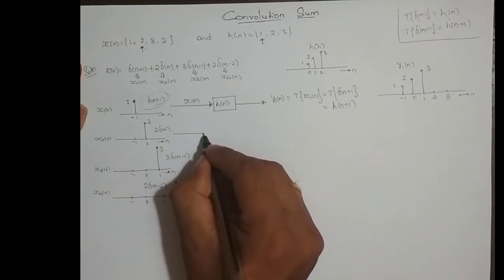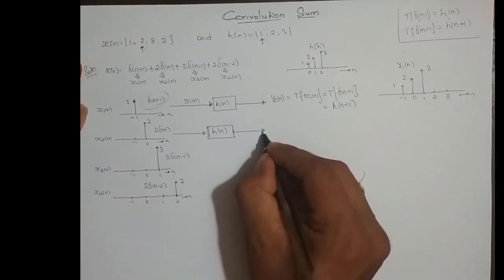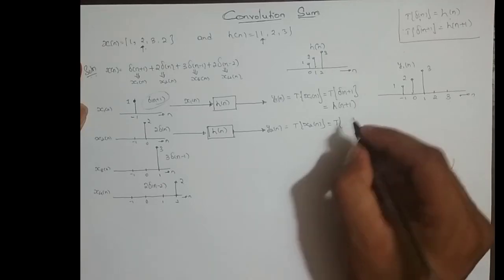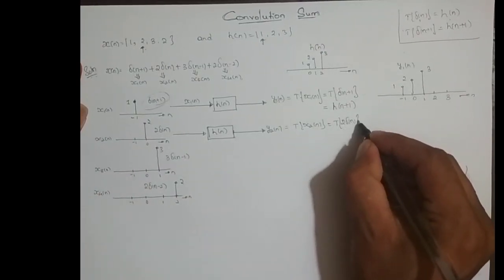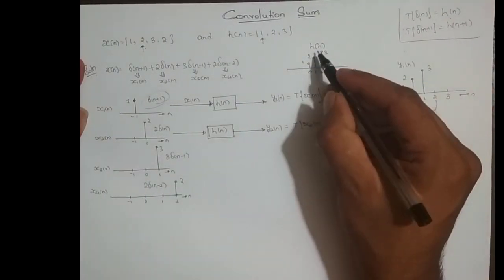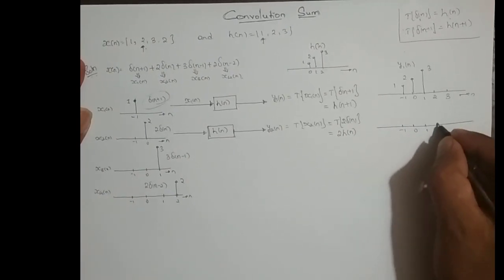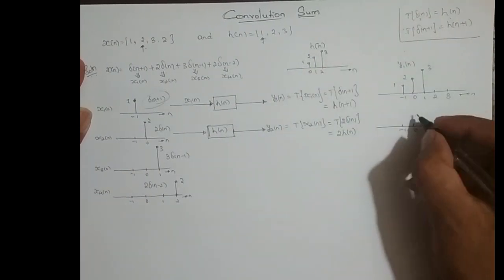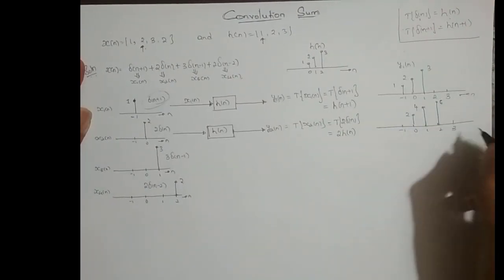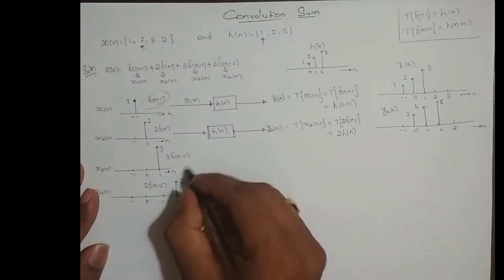Next, x2(n) is fed to the same system h(n) to get y2(n). Since x2(n) = 2·δ(n), the transformation gives y2(n) = 2·h(n). To obtain 2·h(n), we amplitude-scale h(n) by a factor of 2, giving values 2, 4, 6 at n = 0, 1, 2.